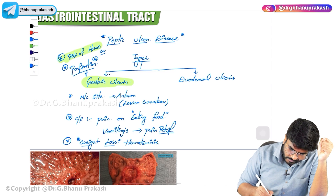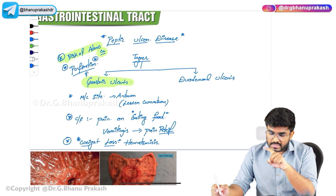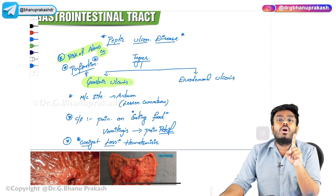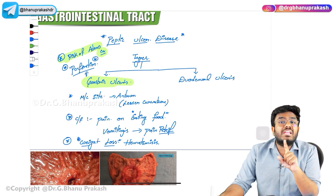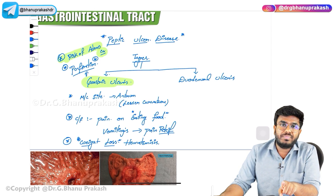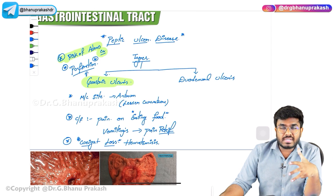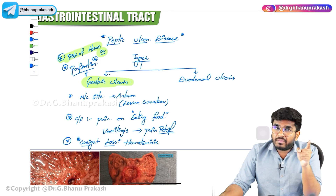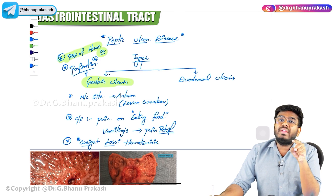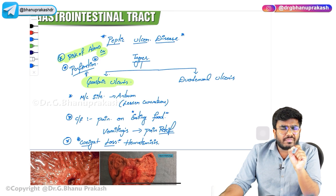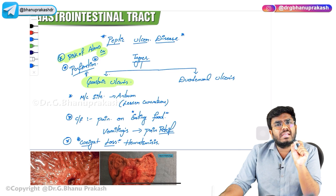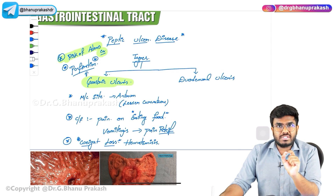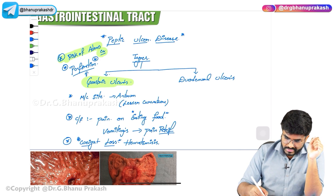Which ulcers have a risk of cancer? With duodenal ulcers, I am telling you now, they do not possess any risk of cancer. Gastric ulcers increase the risk of cancer. Gastric ulcers present with pain on eating food, vomiting will relieve the pain, the patient is going to have weight loss, and the most common site is the antral region near the lesser curvature.